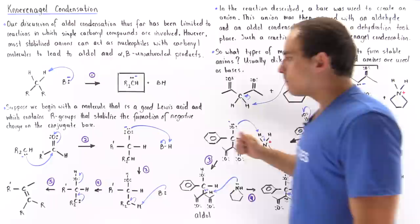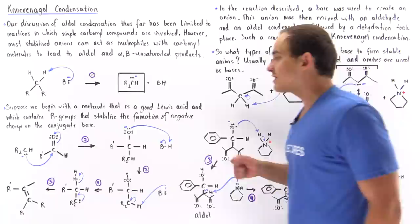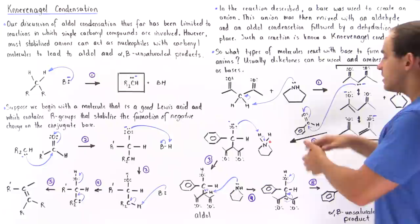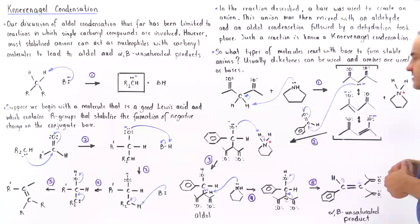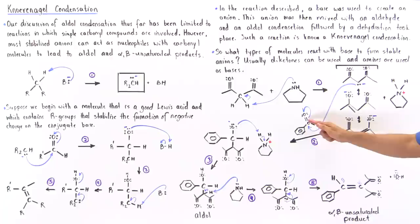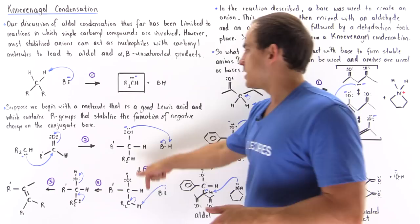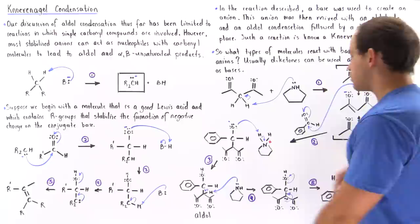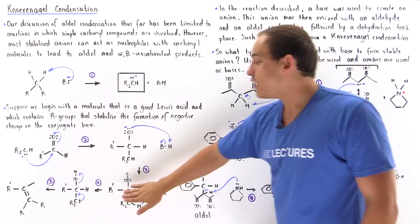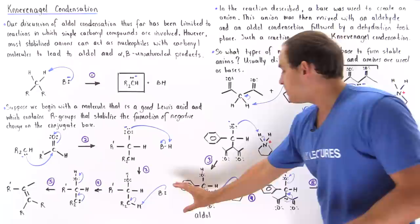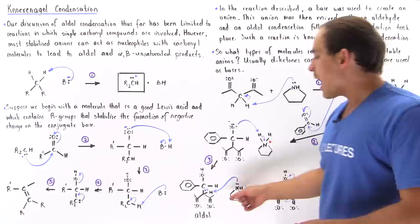Now in step number two, we take our anion — our nucleophile — and react it with some type of aldehyde. Let's suppose the aldehyde we're using has a carbonyl double bond, an H atom, and a benzene ring. So basically in step number two, these electrons attack the carbon nucleophilically, displacing the pi bond and placing our electrons onto the oxygen, giving us a negative charge on this electronegative oxygen. Now in step number three, our BH — our conjugate acid to this base — acts to protonate the oxygen, and in step three we form our aldehyde product. This is the intermediate, because it will eventually form the alpha-beta unsaturated product — our beta hydroxy aldehyde intermediate.